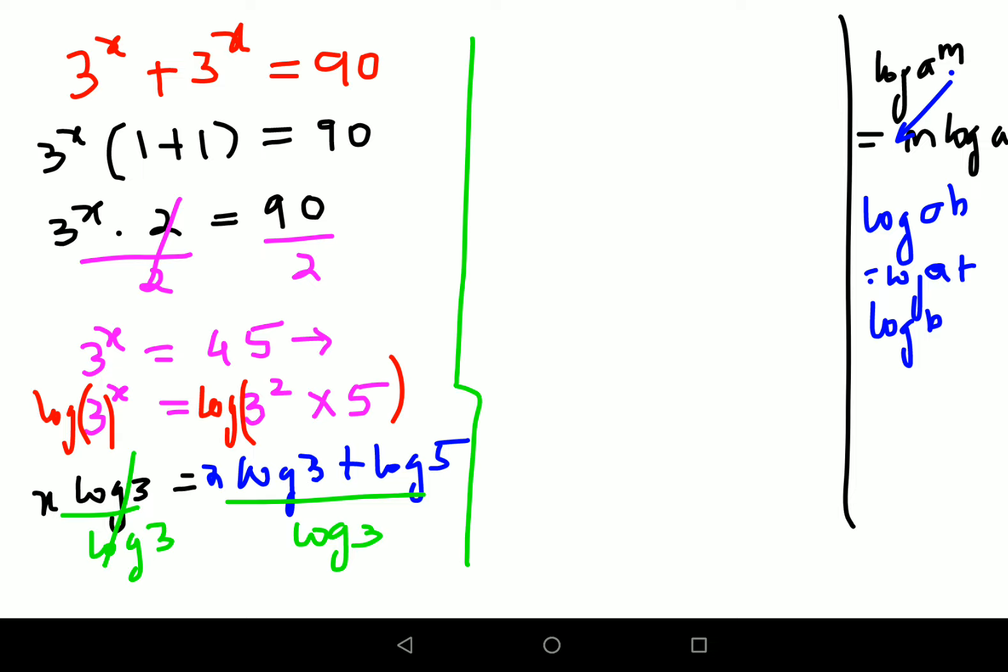So here what I can say is x equals to, we will split the numerator. So we will have 2 times log 3 upon log 3 plus log 5 upon log 3.